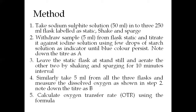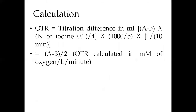Calculate oxygen transfer rate using the formula: OTR = (A − B) × normality of iodine (0.1) ÷ 4 × 1000 ÷ 5 × 1 ÷ 10, where 10 is the time interval in minutes. If you are taking 15 minutes, divide by 15; if 30 minutes, divide by 30. So (A − B) ÷ 2 gives the OTR, calculated in millimolar of oxygen per litre per minute.